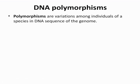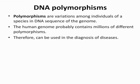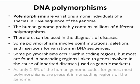Learning objective six is defining polymorphism. Polymorphism is the presence of genetic variation within the population. The human genome contains millions of different polymorphisms, which we can use to diagnose diseases. These are caused by point mutations, deletions, or insertions. Polymorphisms usually occur in non-coding regions — only two to five percent of the human genome codes for genes, and most polymorphisms are present in non-coding regions.